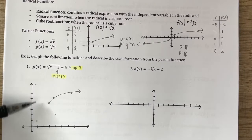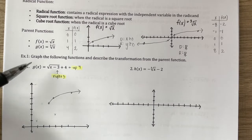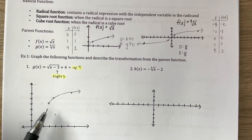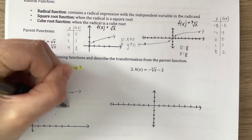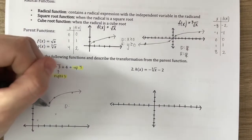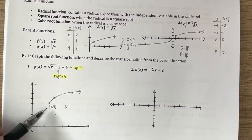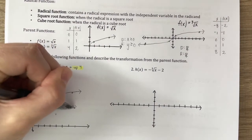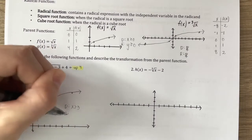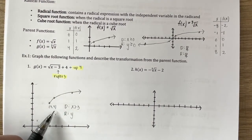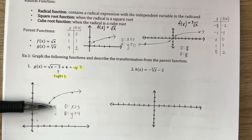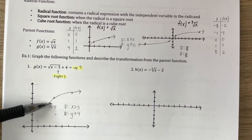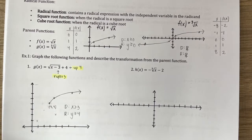If I tried to plug in x equals 1, then 1 minus 3 is negative 2 inside the radical — not a real number. So the domain changes because my starting point changed from (0, 0) to (3, 4). The domain is x is greater than or equal to 3. The range is y is greater than or equal to 4, because I can never get any points lower than that starting point on my graph. This endpoint or starting point dictates the domain and range for a square root function.